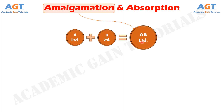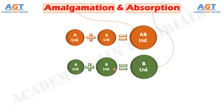Amalgamation, as its name suggests, is nothing but two companies becoming one. On the other hand, absorption is the process in which one dominant company takes control over the weaker company.